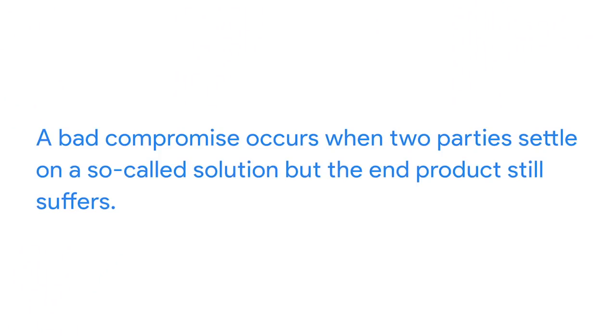Typically we think of compromises as a positive way to resolve issues, but there is such a thing as a bad compromise. A bad compromise occurs when two parties settle on a so-called solution, but the end product still suffers. When it comes to compromising on important project goals, it's not productive for either party to settle simply because it's a means to an end. You may have to help your team or stakeholders make hard choices for the greater good. In the next video, we'll explain some more techniques for communicating with your team, including timeouts and retrospectives.